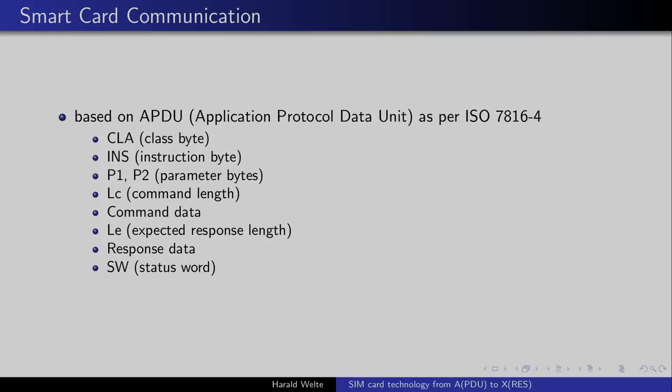After we're able to transmit bytes between card and reader, we have something called APDUs — Application Protocol Data Units — specified as per ISO 7816-4. An APDU consists of a class byte specifying the class of command, an instruction byte specifying the specific instruction (like read or write a file), parameter bytes whose meaning is specific to the instruction, a length byte, command data, an expected response length, response data, and last but not least a status word — where the card tells you whether execution was successful or whether there was some error.